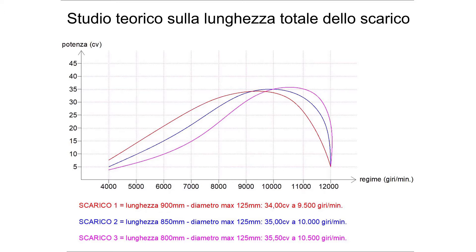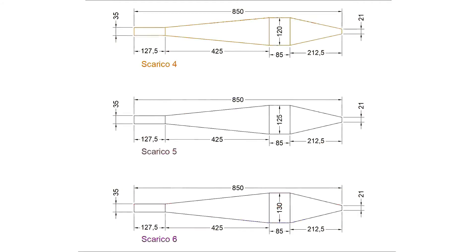The fact that the engine's power increases in a negative, not linear way is caused by the fact that even though we tuned it to 500 rpm higher by making a shorter muffler, since we didn't increase the maximum diameter of the belly, we prevent the engine from improving its respiratory capabilities. Let's now observe exhausts 4, 5 and 6: same length, 850mm, but with a different maximum diameter.